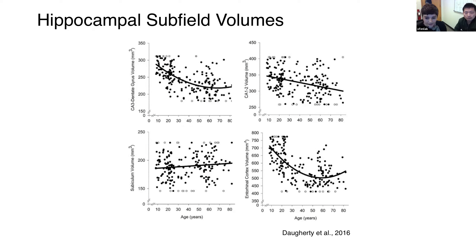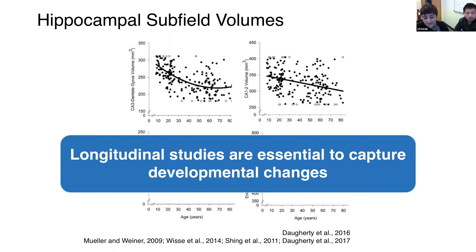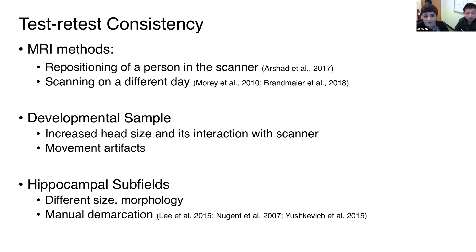While this is an exciting hypothesis, most evidence — with few exceptions — is based on cross-sectional studies. To meaningfully interpret any age-related difference or developmental change, we need longitudinal data. However, longitudinal studies have their own challenges. When using MRI to estimate volumetric measures of hippocampal subfields in a developmental sample, many sources contribute to error variance, which might lead to wrong conclusions.